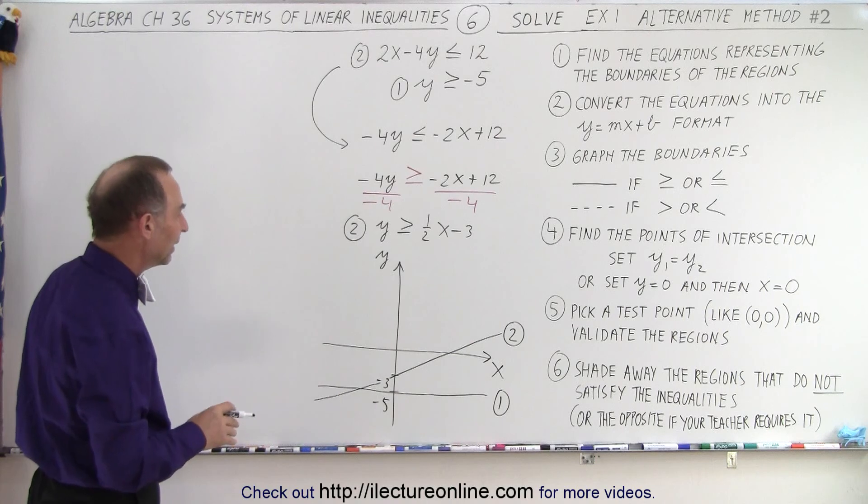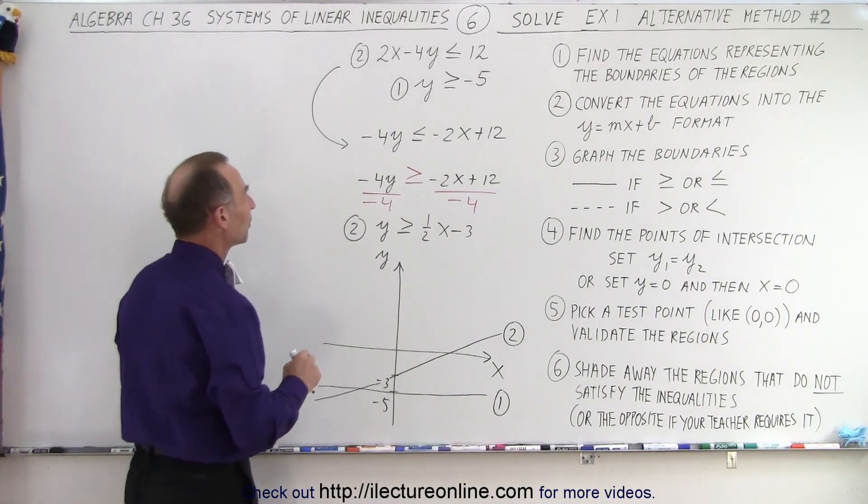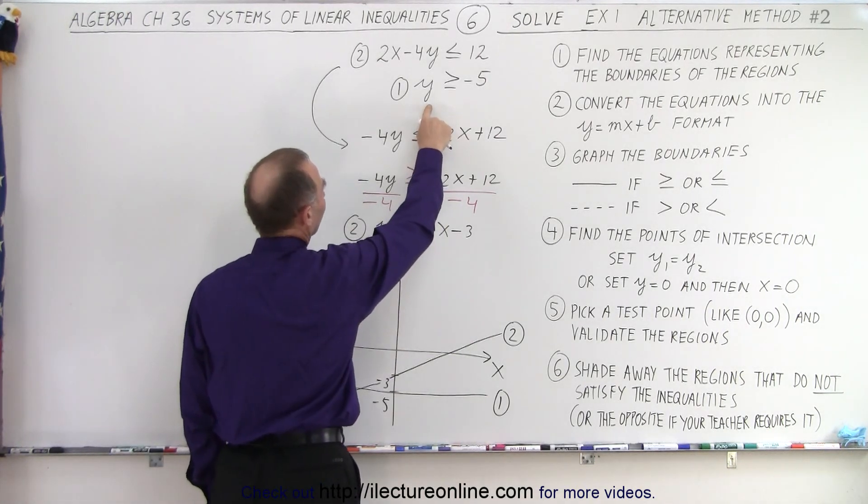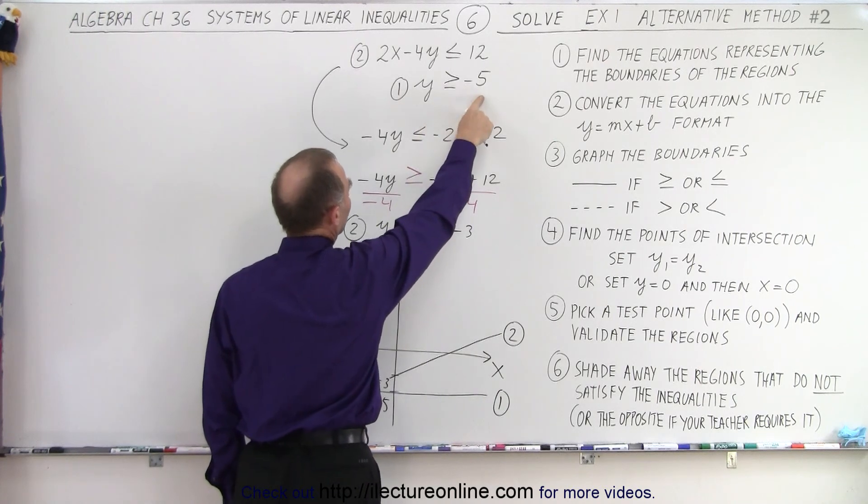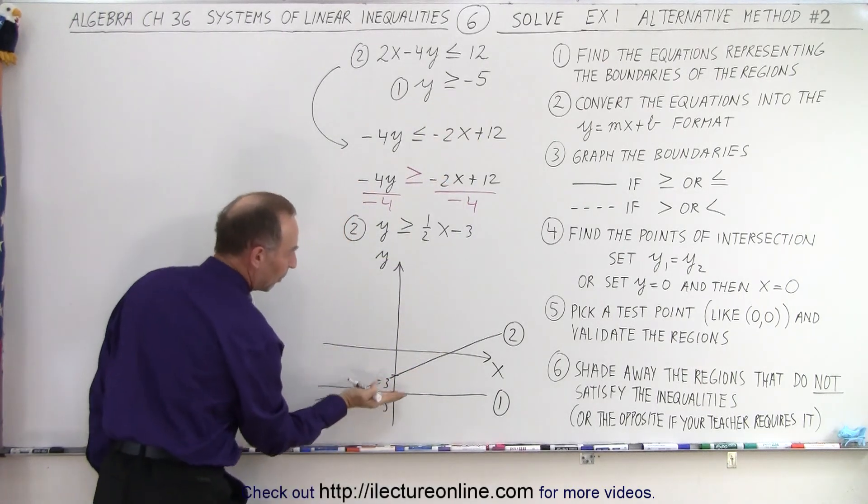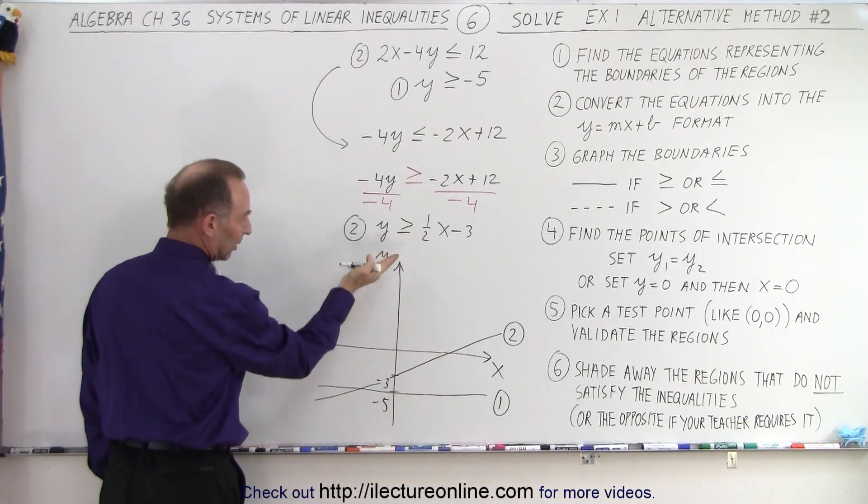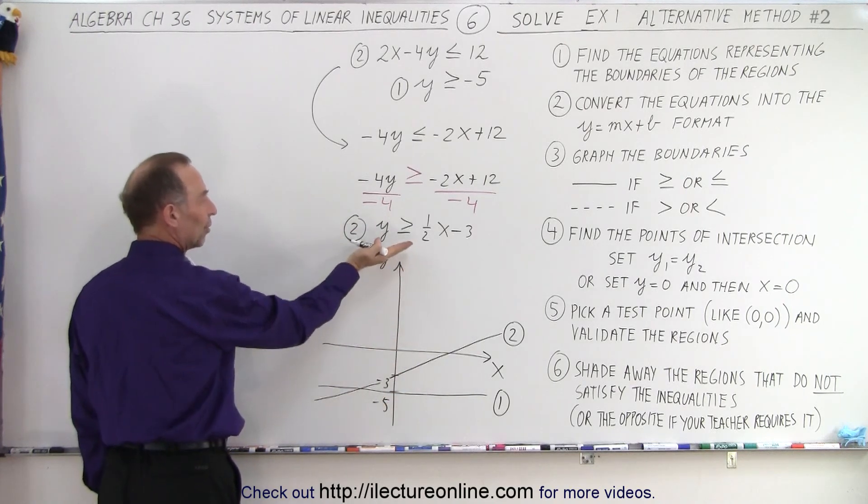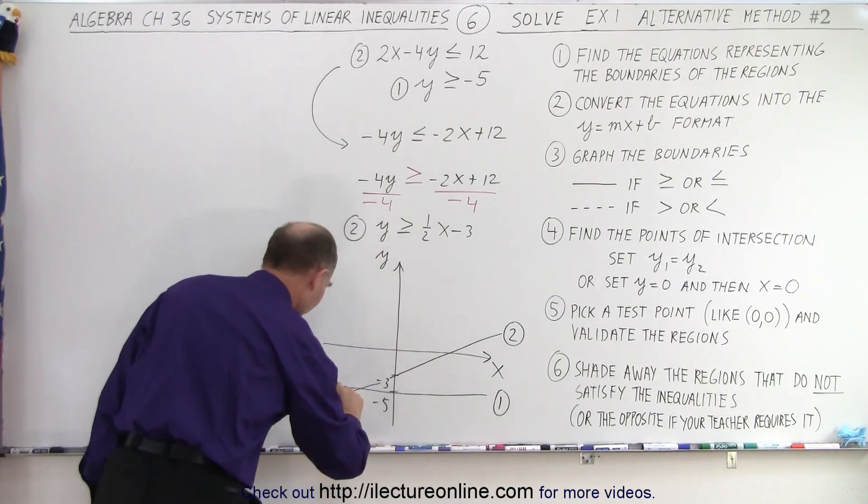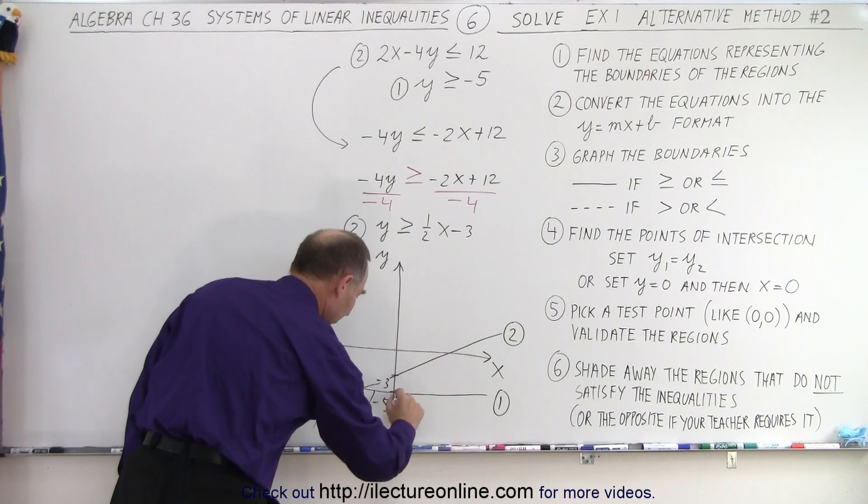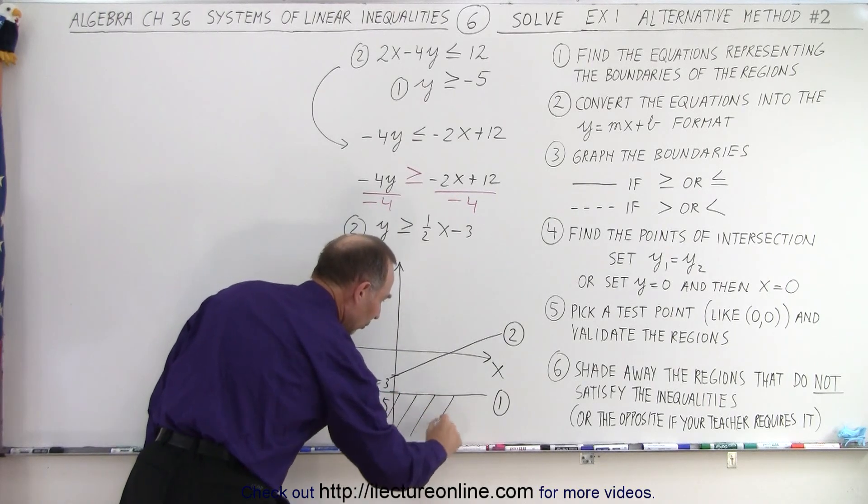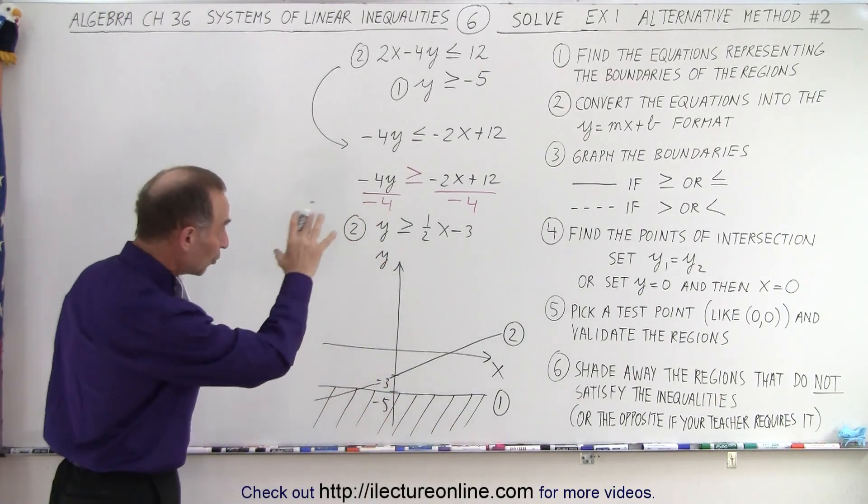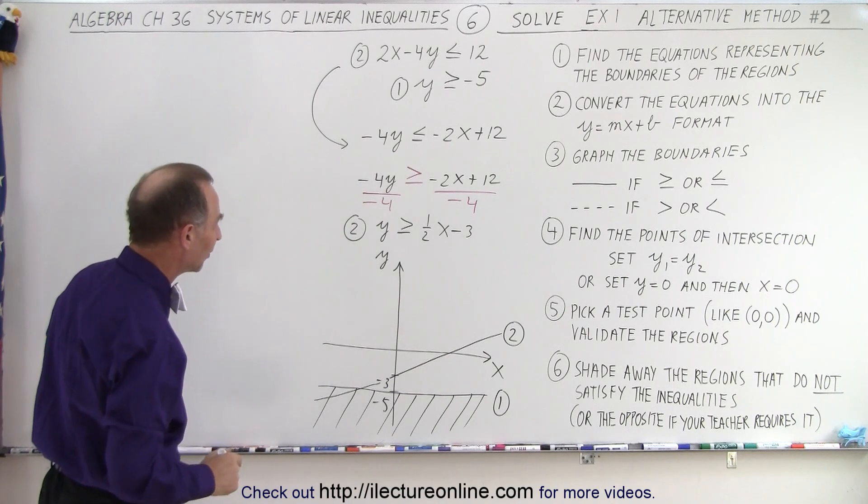Now we ask ourselves: we're looking for all the values of y that are greater than or equal to -5. That's of course above the -5 line—y is greater than -5 for the region above that. So the region below that we don't want. I still like the idea of crossing out the region we don't want; it becomes cleaner when we have a multitude of these inequalities, which we'll have in later examples.